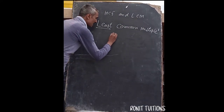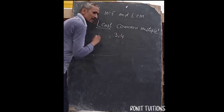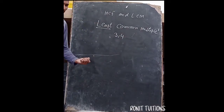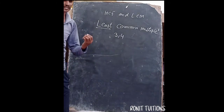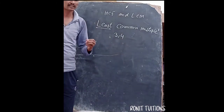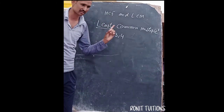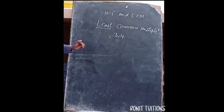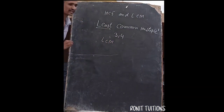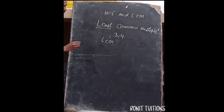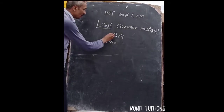Suppose we take an example: what is the LCM of 3 and 4? These are two co-prime numbers. Co-prime numbers always have HCF equal to 1 — you already read that in the last class. Today we are finding the LCM. There are two methods; one method is the prime factorization method.